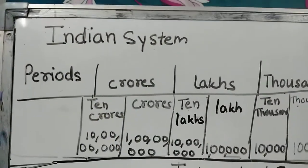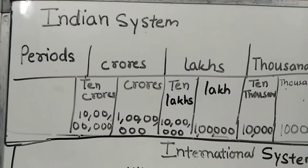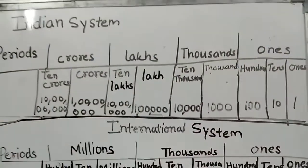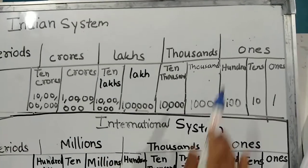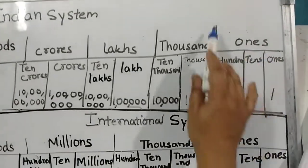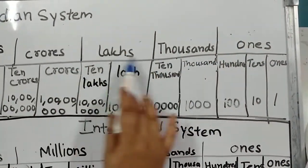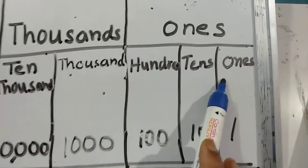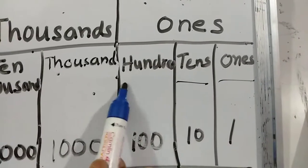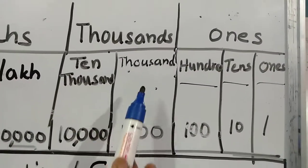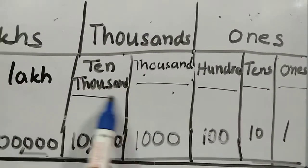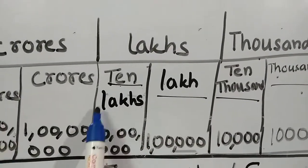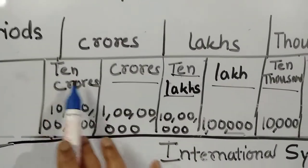Indian number system. In the Indian number system, there are mainly four periods. One is ones, thousands, lakh, and crores. In ones, there are three parts: ones, tens, hundreds. In thousands, we have two parts: thousand and ten thousand. In lakh, we have lakh and ten lakh. In crore, we have crore and ten crore.